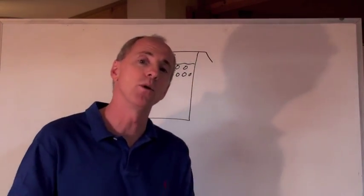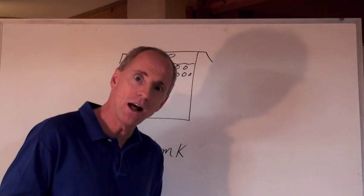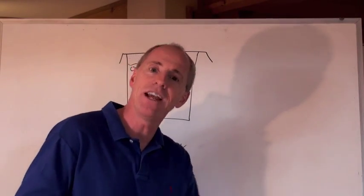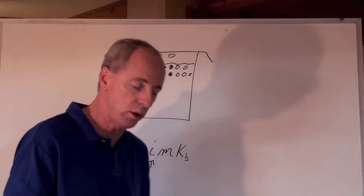m is the molality. That's where molality comes in. And the K is called the molal freezing point depression constant or molal boiling point elevation constant. It's either Kf for freezing or Kb for boiling.